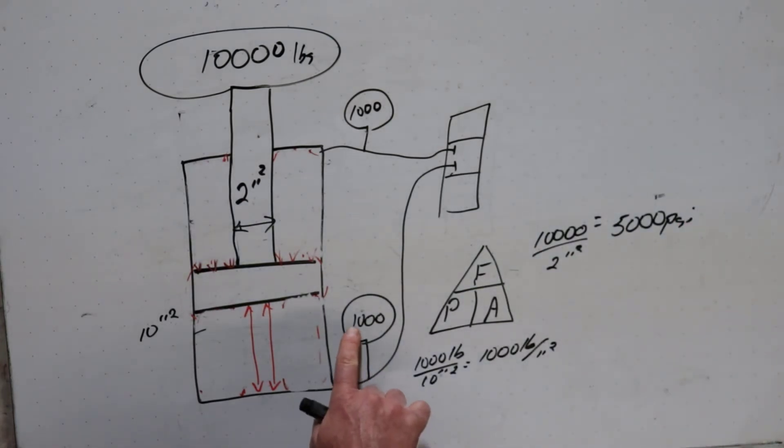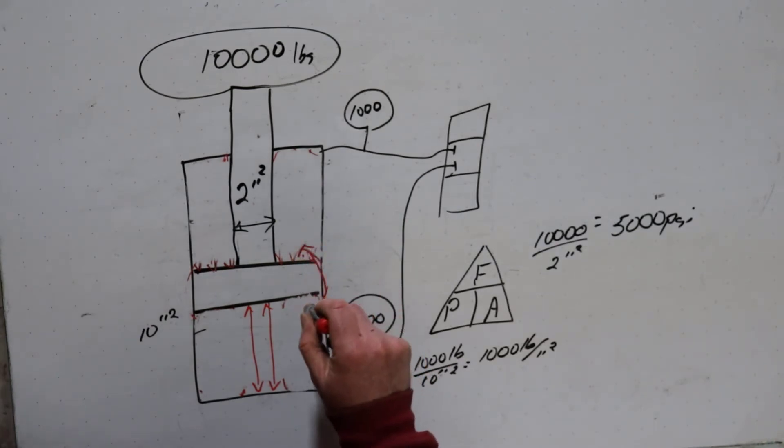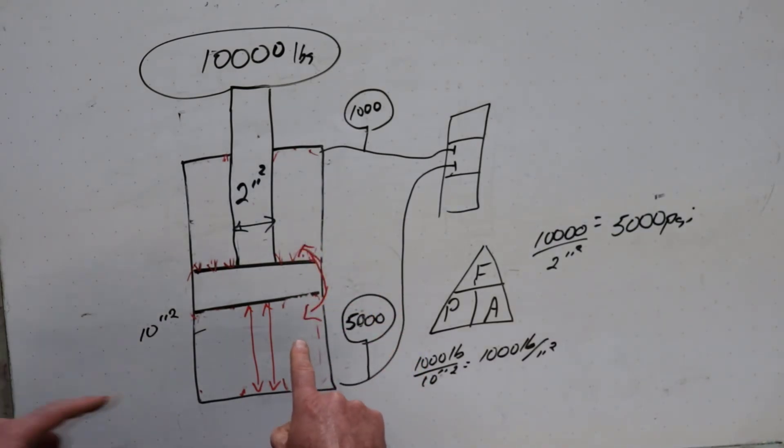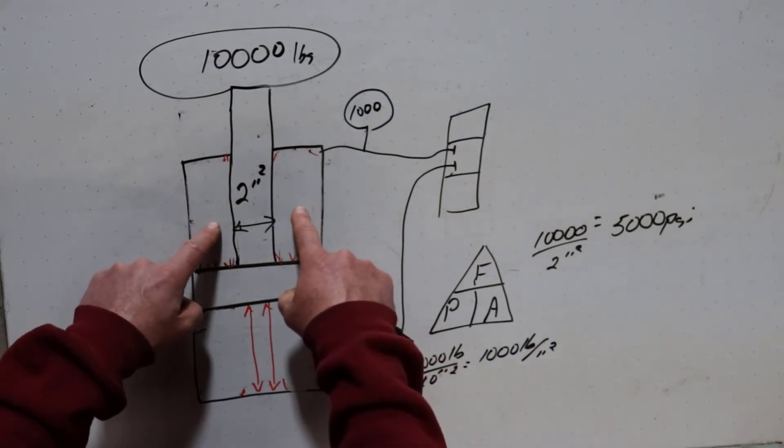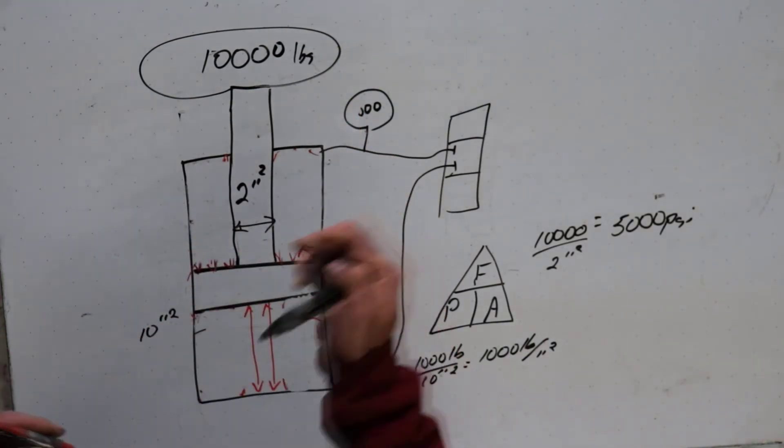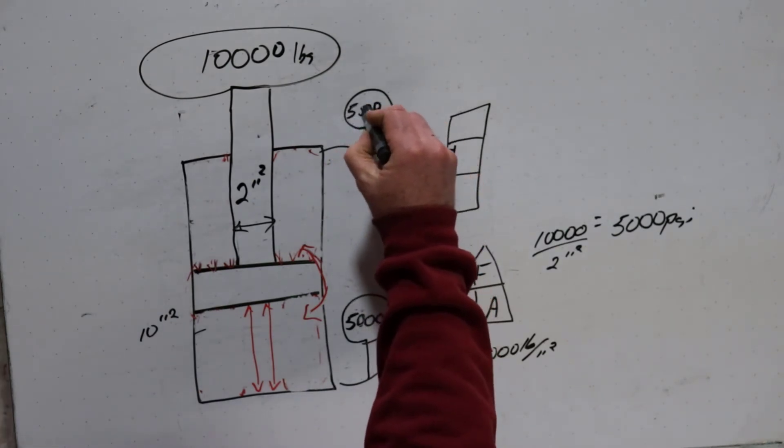So that means this gauge now must read 5,000 psi. If the seals are blown, which we said they have, and oil can transfer from side to side, oil is equal and undiminished in all directions. That means this side also has 5,000 psi.